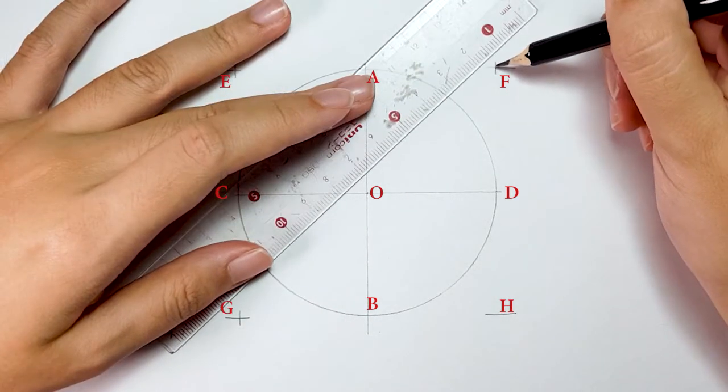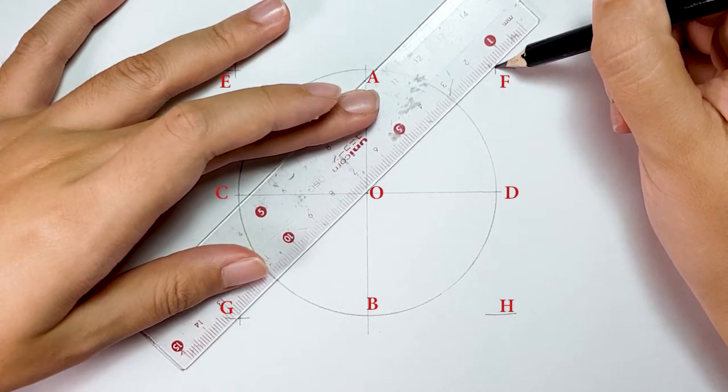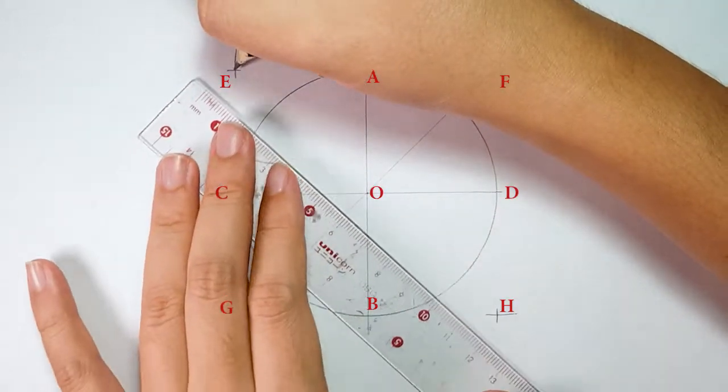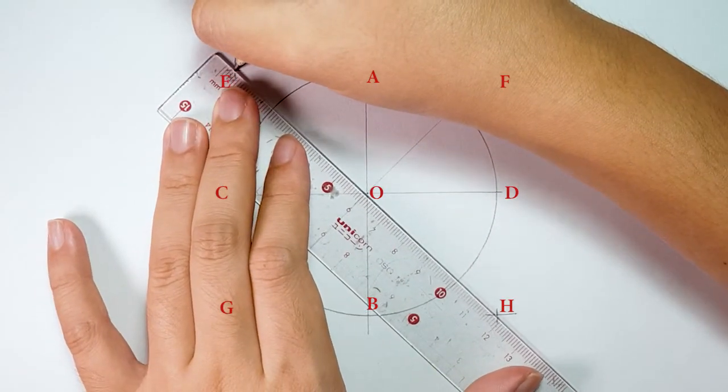Place your ruler on point F, O, G and draw a straight line. Repeat the same step on point E, O, H.